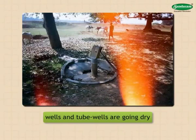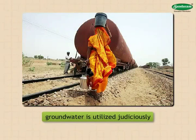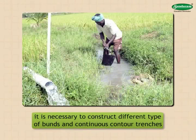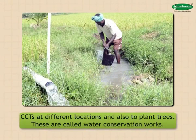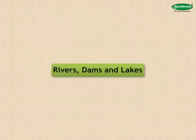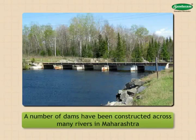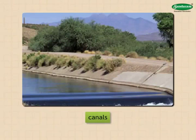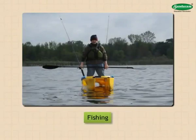In order to change this situation, it is necessary that ground water is utilized judiciously. Moreover, to make ground water available continuously, it is necessary to allow rain water to seep into the ground. For this purpose, it is necessary to construct different types of bunds and continuous contour trenches (CCTs) at different locations, and also to plant trees. These are called water conservation works. A number of dams have been constructed across many rivers in Maharashtra. From these dams, canals are laid out to supply water for agriculture.